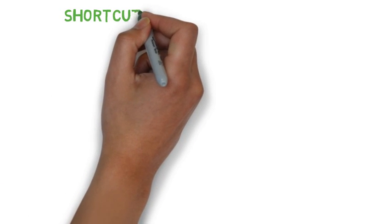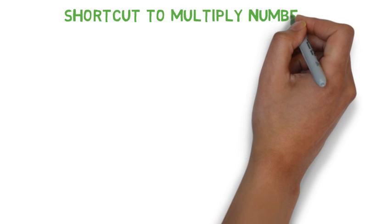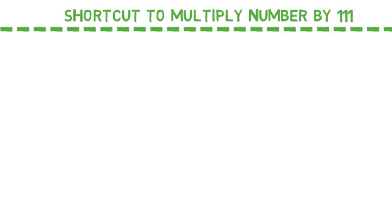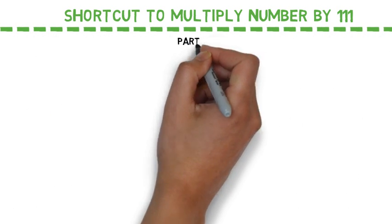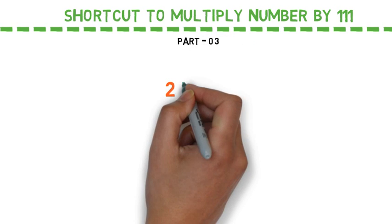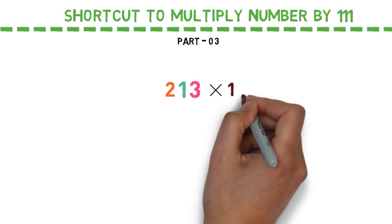Hello friends, welcome to the shortcut world. In this video I am going to teach you how to multiply any number by 111, which means triple one. My dear friends, this is part 3. Let us consider a number 213.